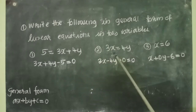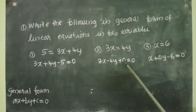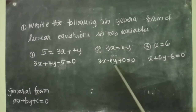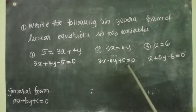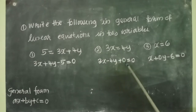Here 3x is on the left side. We can take 4y also to the left side. The c part is missing, so we can write 0. The answer is 3x minus 4y plus 0 equal to 0. A equal to 3, b equal to minus 4, c equal to 0.